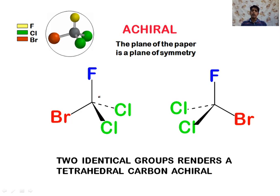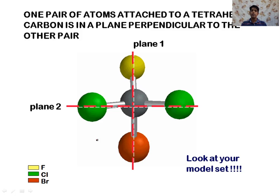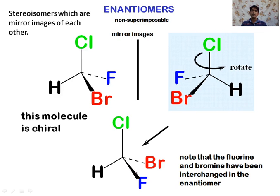An achiral compound has a plane of symmetry. Such molecules are known as achiral compounds because they superimpose on their mirror image as per the definition. This is also an example of a compound which has a plane of symmetry.